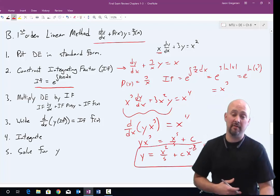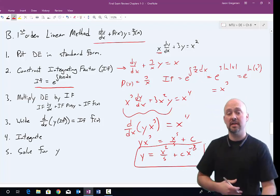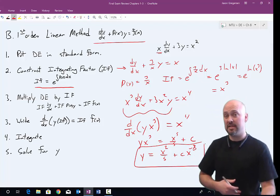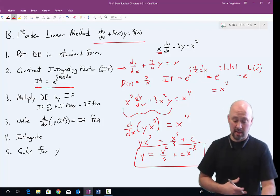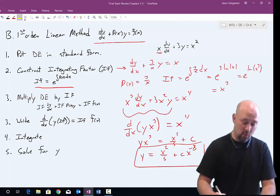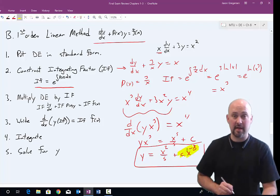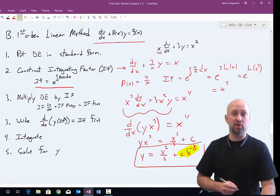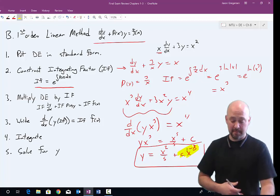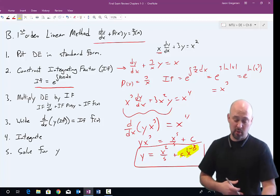Once we've written our solution in that form, then we can take a little look to see if we can learn anything about how our solution behaves. For instance, as time, or x in this case, gets large, as our independent value increases. In this case, I see that as x gets big, that one of these terms is going to disappear. That term is. Which means that term is called a transient term. And so as time gets big, as x gets big, our solution will look like x squared over five.